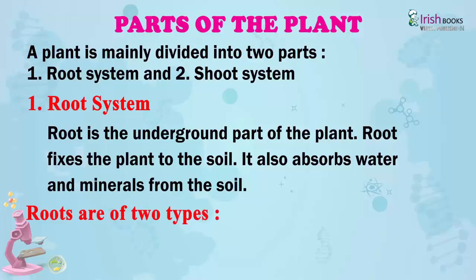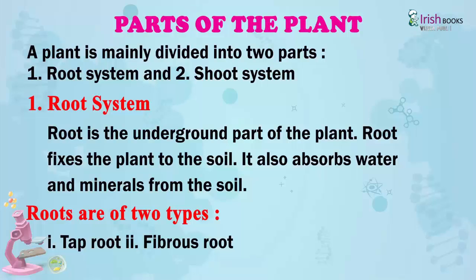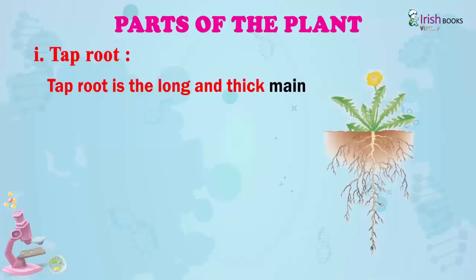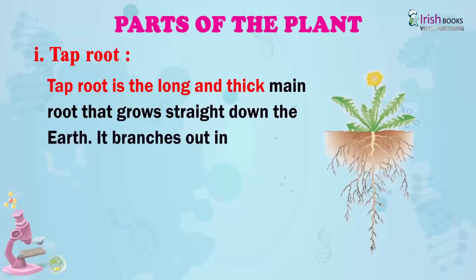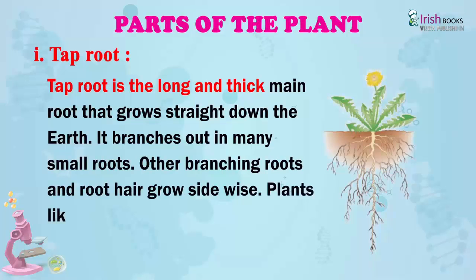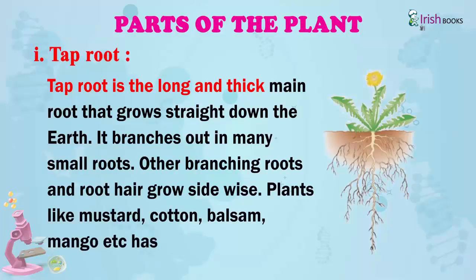Roots are of two types: tap root and fibrous root. Tap root. Tap root is a long and thick main root that grows straight down into the earth. It branches out into many small roots. Branching roots and root hair grow sideways. Plants like mustard, cotton, balsam, mango etc. have tap roots.